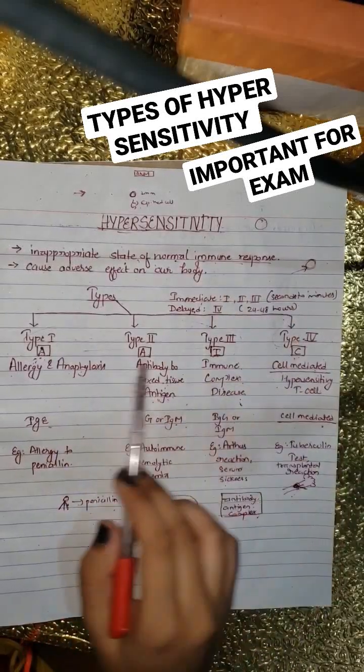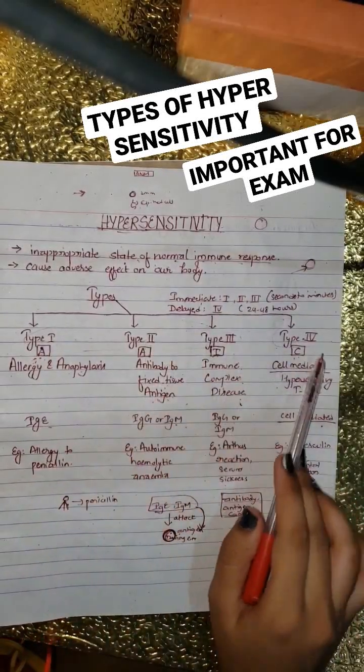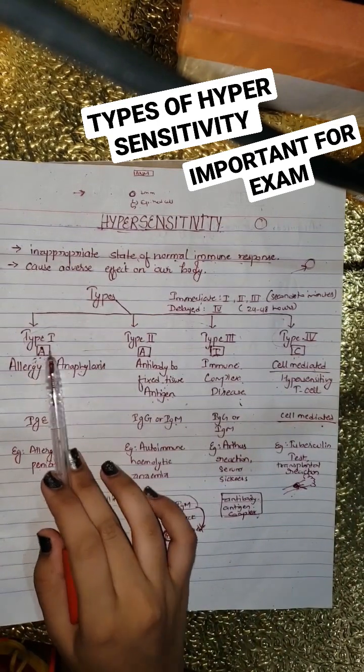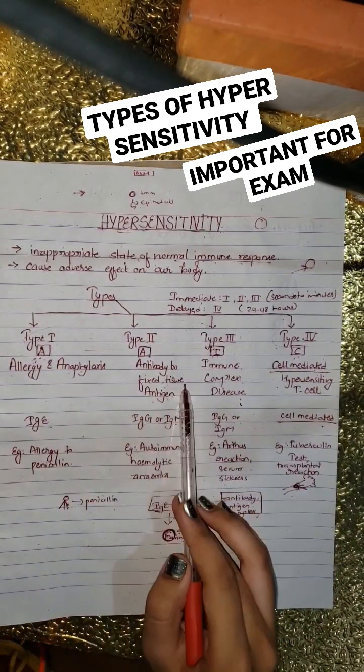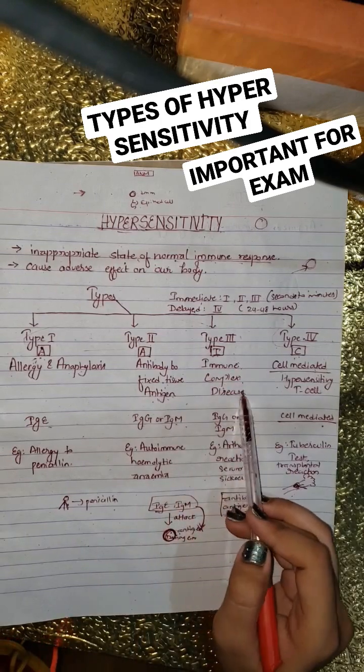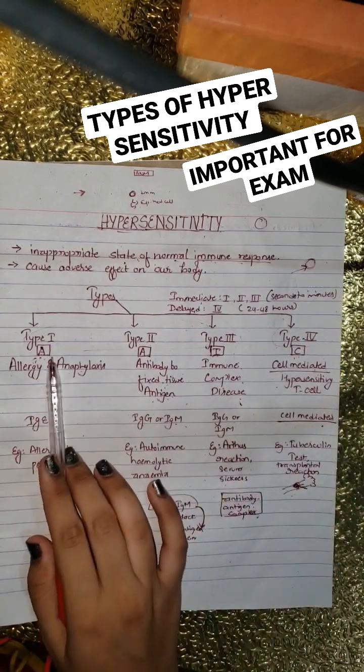In our body there are four types of hypersensitivity reactions: type 1, 2, 3, and 4. We can remember this by AAIC, that means Allergy and Anaphylaxis, Antibody to fixed tissue antigen, Immune complex disease, and Cell mediated.